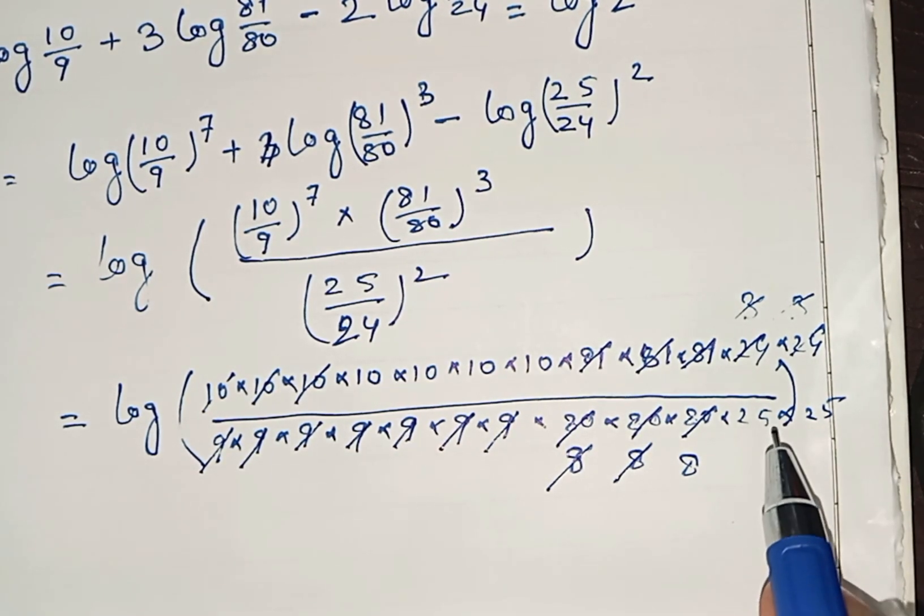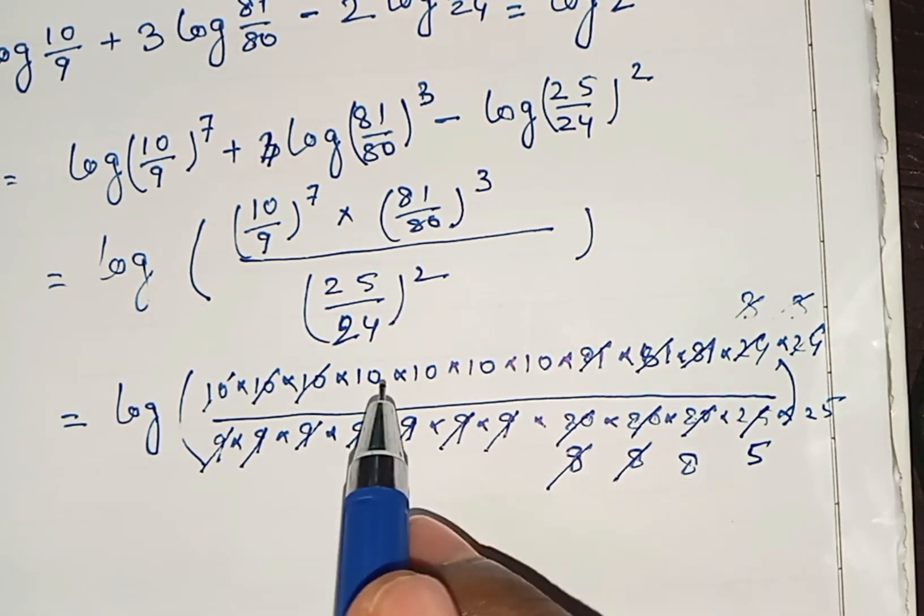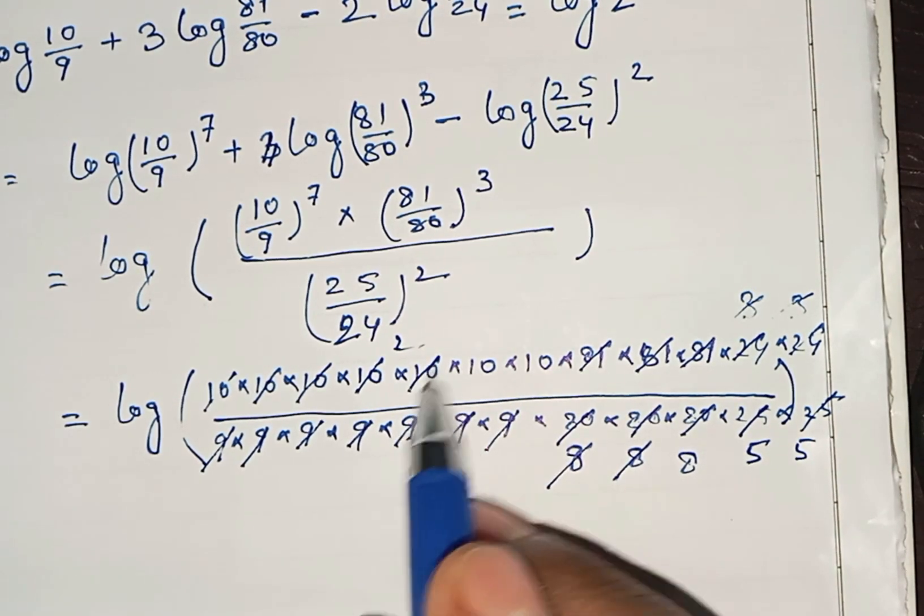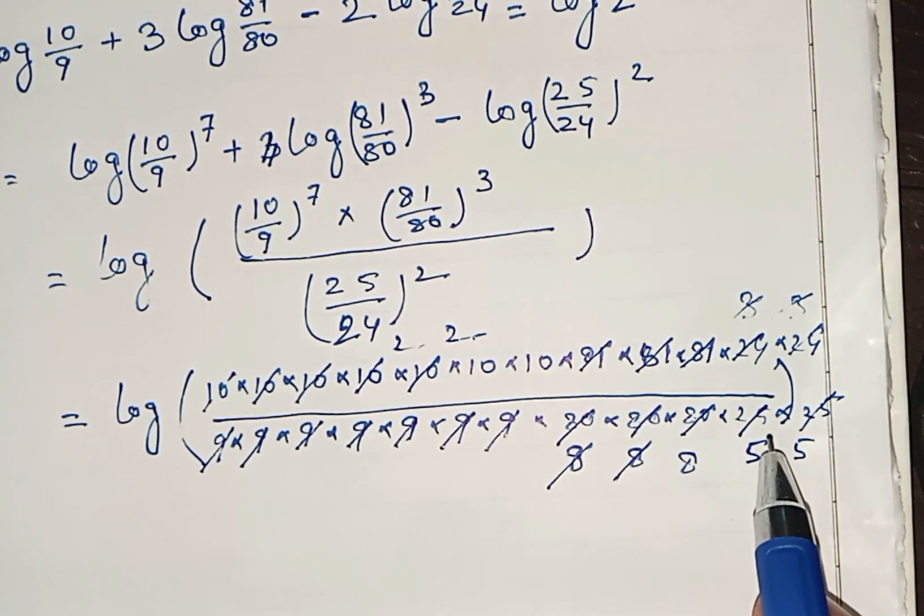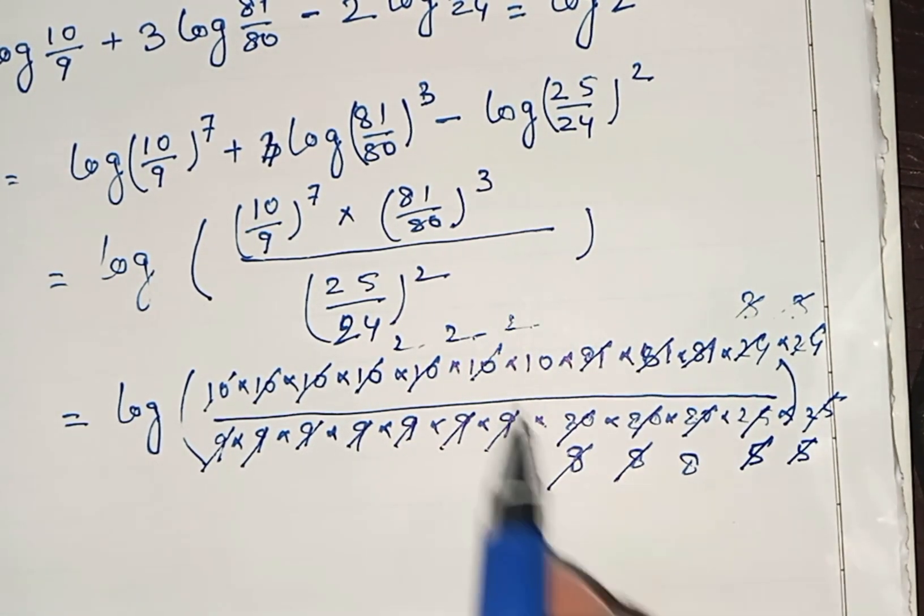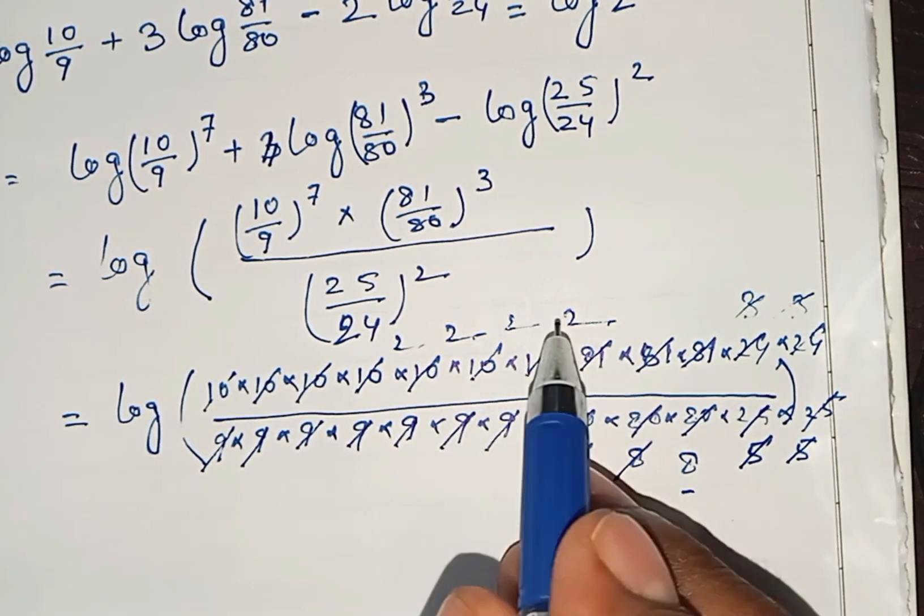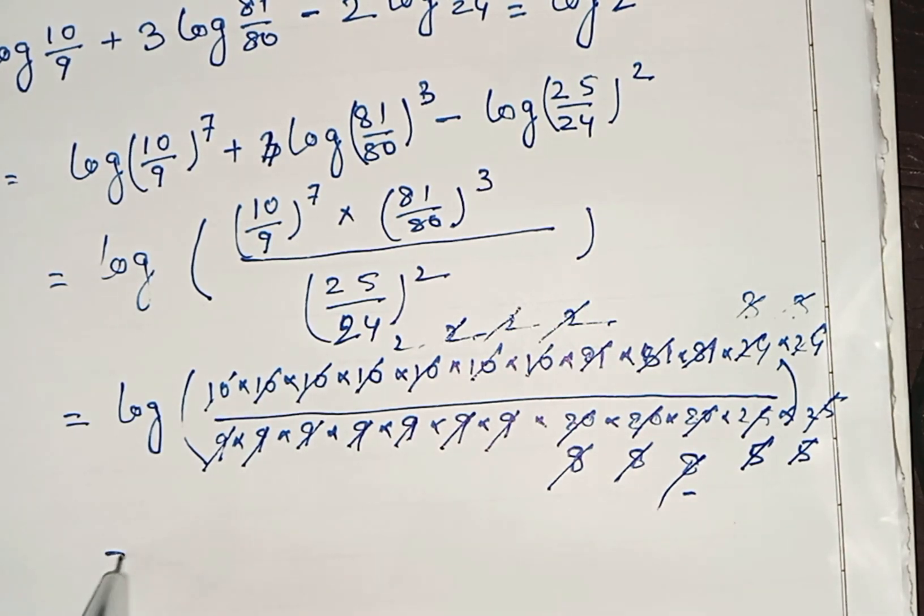Now by 5 it is 2, again 5, this is 2, now 5, 2, then again 5, 2. Now 8 is here, so 2, 2, 2, 8 will cancel.